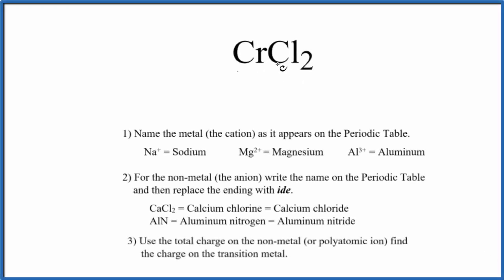To write the name for CrCl2, we first need to recognize we have a metal and a nonmetal here. So we're going to name this as an ionic compound. Because there are two different elements, we're going to call this a binary ionic compound.